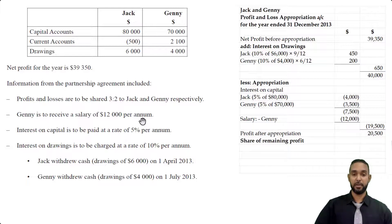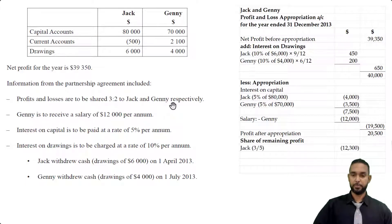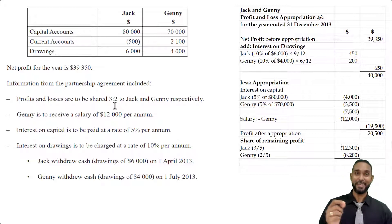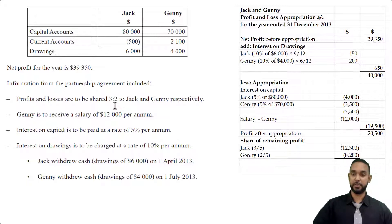Now we have to share the remaining $20,500 profit. The profit sharing ratio is 3 to 2 to Jack and Jenny respectively. We put three-fifths of the profit for Jack and two-fifths for Jenny. You add 3 and 2 to get 5, then put each individual value over the five separately. That gives us a three-fifths, two-fifths split, which ties back to the same $20,500, leaving zero profit in the appropriation account.